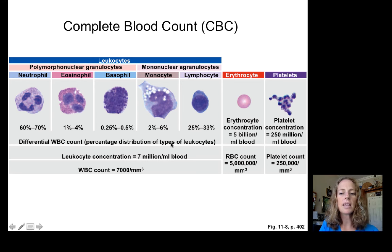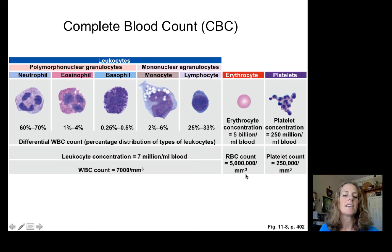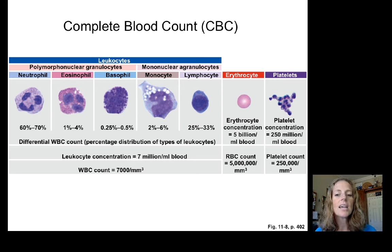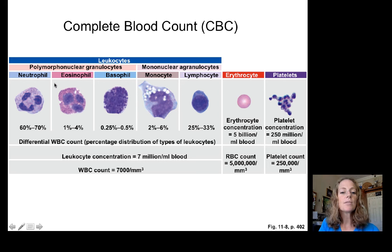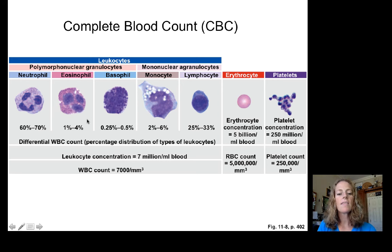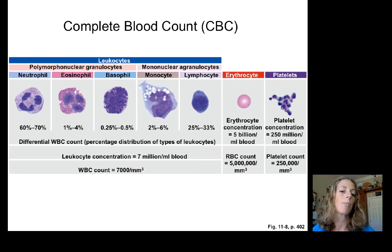The CBC — complete blood count — is done to compare normal expected levels of white blood cells, red blood cells, and platelets to any conditions a patient might have. If abnormalities are found, you can trace them back to function. For example, eosinophils are only about 1 to 4% of the complete blood count; a huge increase could indicate a parasitic infection, and you would treat the patient appropriately.